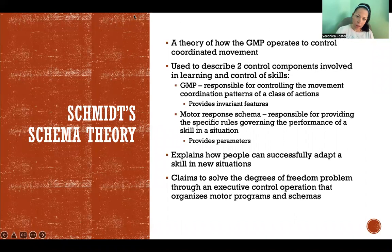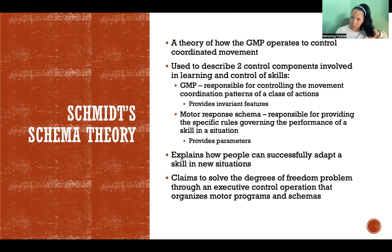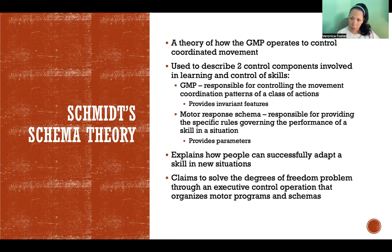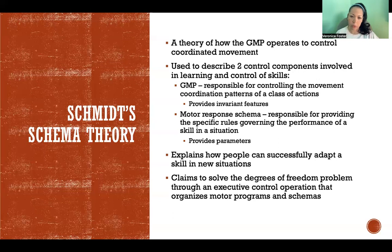Schmidt's schema theory is a theory of how the GMP operates to control coordinated movement. There are two control components. The first is the GMP itself, responsible for controlling the movement coordination patterns of the whole class of actions and providing the invariant features common to all movements in that class. The second control component is the motor response schema, which provides the specific rules governing the performance of a skill in a situation — the specific parameters for that action given the environmental context and the needs of that movement.